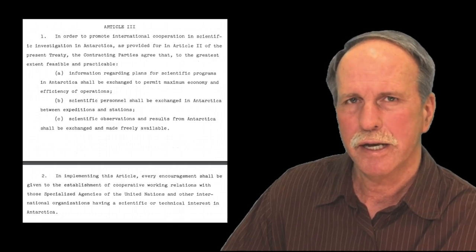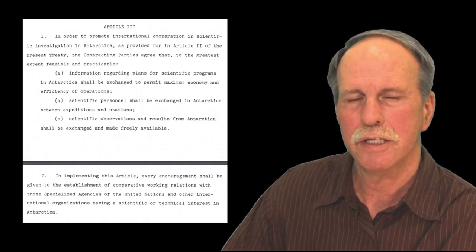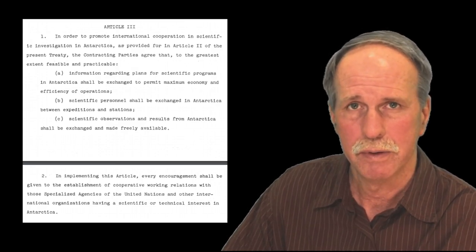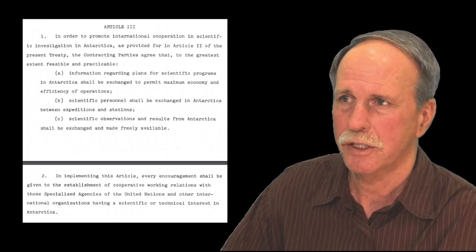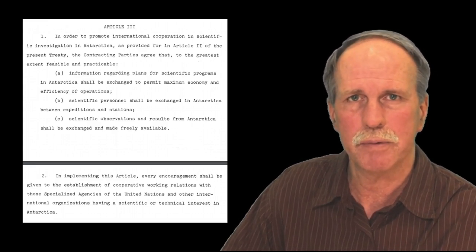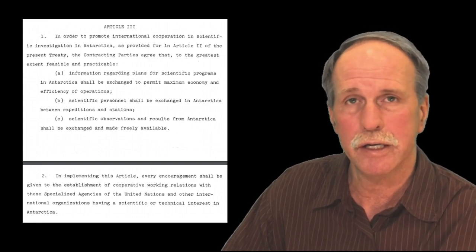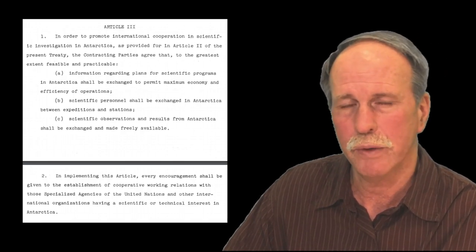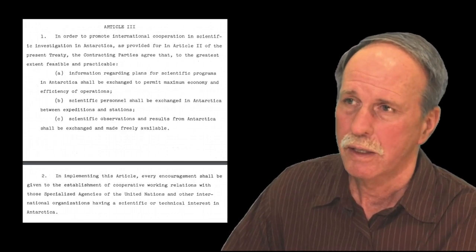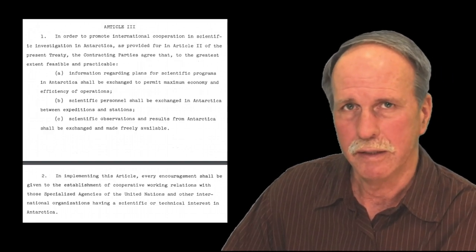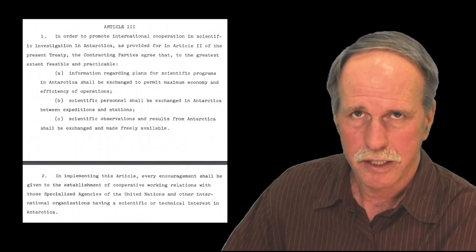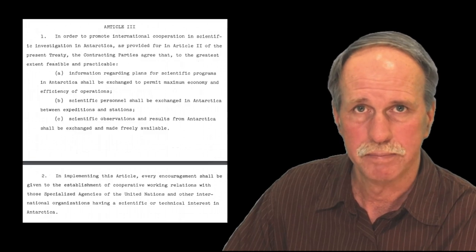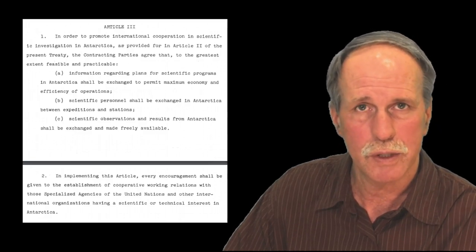Now Article 3 is actually kind of an interesting article. It says that all science in Antarctica will be coordinated amongst the different powers. We don't want to duplicate efforts. We want to sit down and do studies, for example, that need to be done at several different locations at the same time. There needs to be some coordination. We want to be able to exchange personnel with the other stations. Antarctica doesn't belong to anyone. Science does not belong to any one nation. Any findings from Antarctica need to be shared with the United Nations and the world. Very noble idea of what science is.